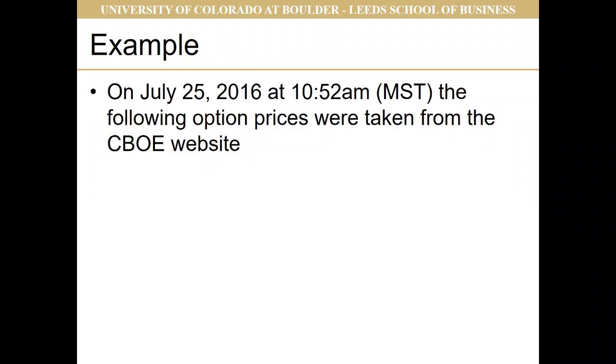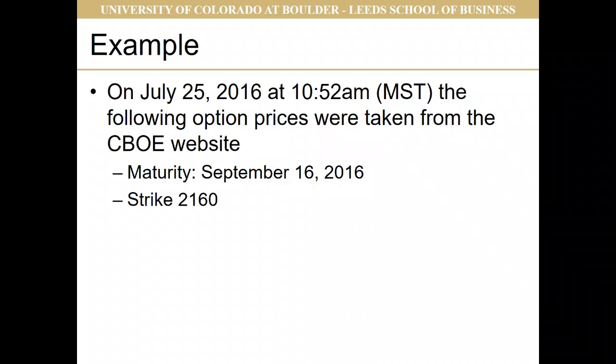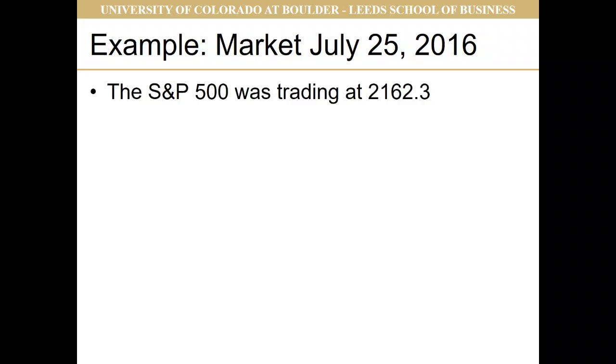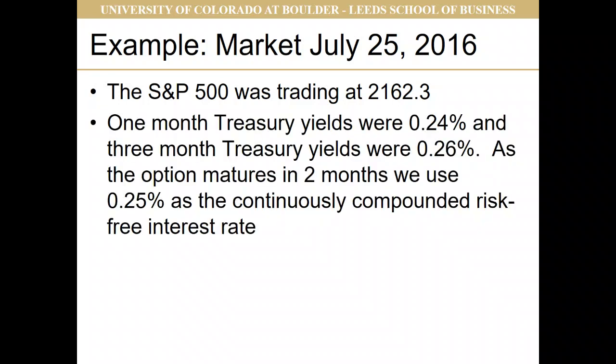First, I want to do an example. On July 25th, 2016, at 10:52 a.m. Mountain Standard Time, the following option prices were taken from the CBOE website. The maturity of the option was September 16th, 2016 — about two months out. The strike was 2160, the bid was 36.80, and the ask was 37.90. The S&P 500 at the time was trading at 2162.3. For the interest rate, one-month Treasury yields were 0.24% and three-month Treasury yields were 0.26%.